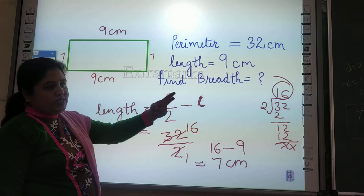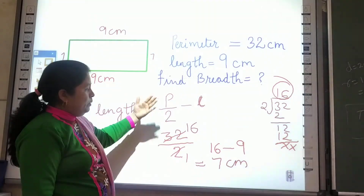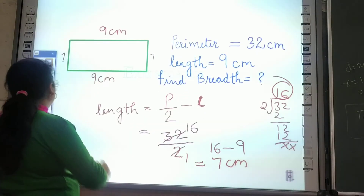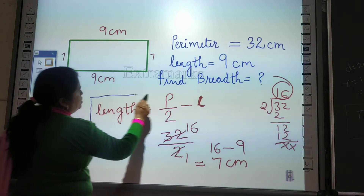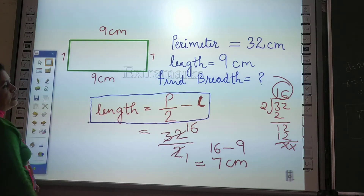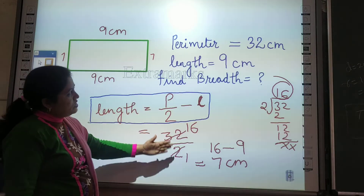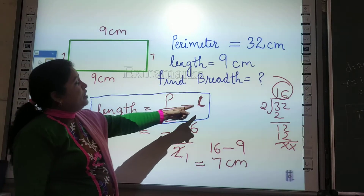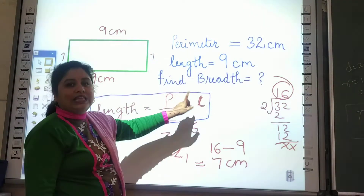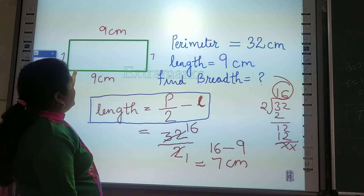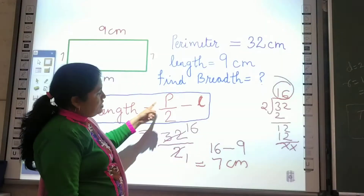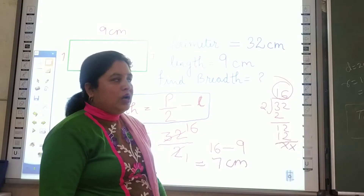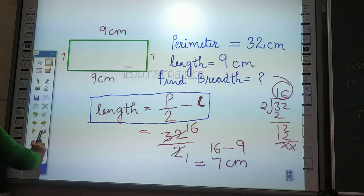Two steps only: Step 1 — perimeter divided by 2. Step 2 — minus the given length. If length is given, minus length; if breadth is given, minus breadth. You have to write down this formula in your copy. For example, if perimeter is given and breadth is 7 cm and you have to find the length: same process — perimeter divided by 2, minus breadth.